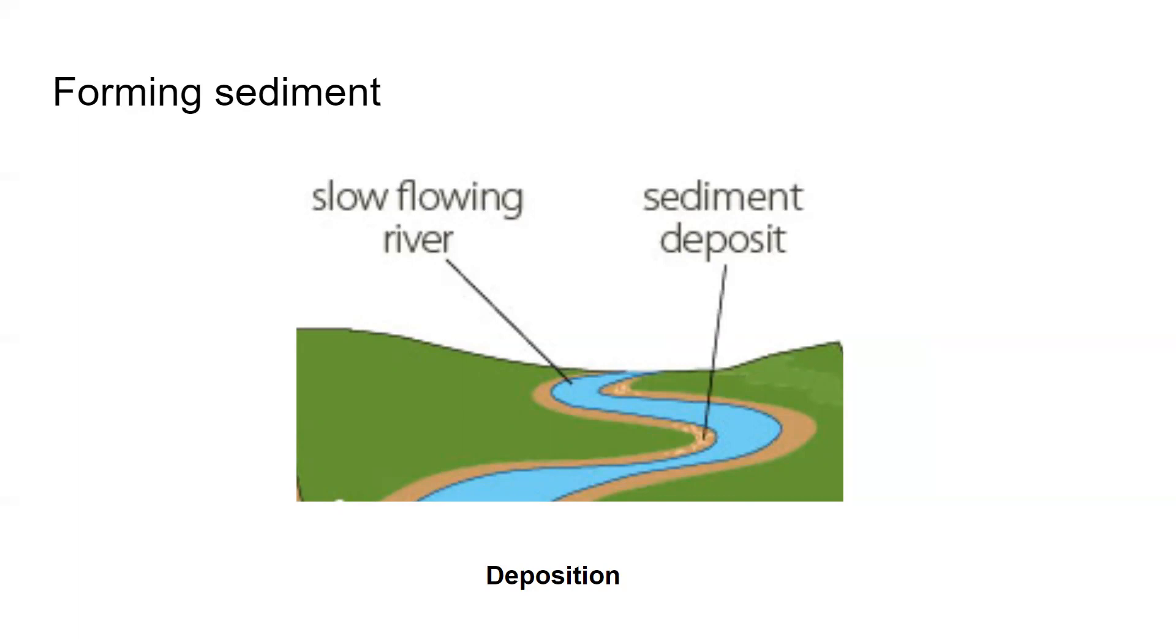When the slope of the land gets less steep, the river flows more slowly. Some rocks then settle on the bed of the river because they are too heavy to be carried. This is called deposition. The deposits build up and form sediments.